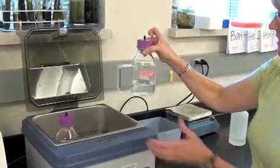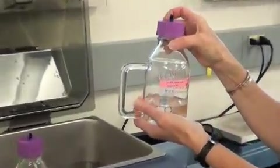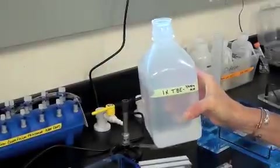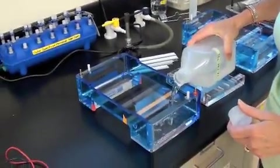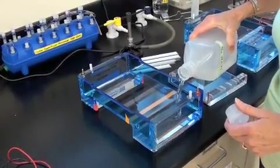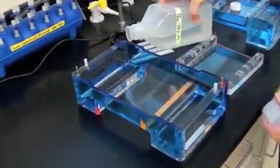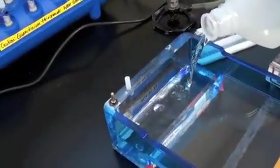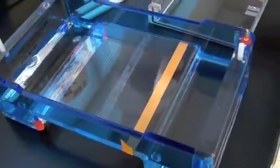When our agarose gel has cooled to the appropriate temperature, enough that you can safely touch it, it's time to pour our gel. We use a gel box that has a gel former inserted in it. We begin by filling the reservoirs of the gel box with our 1x TBE buffer.